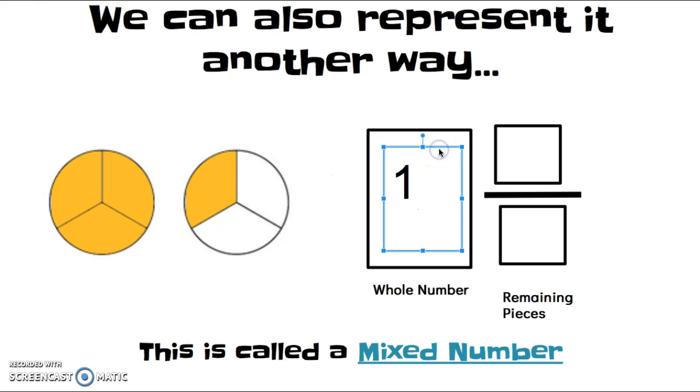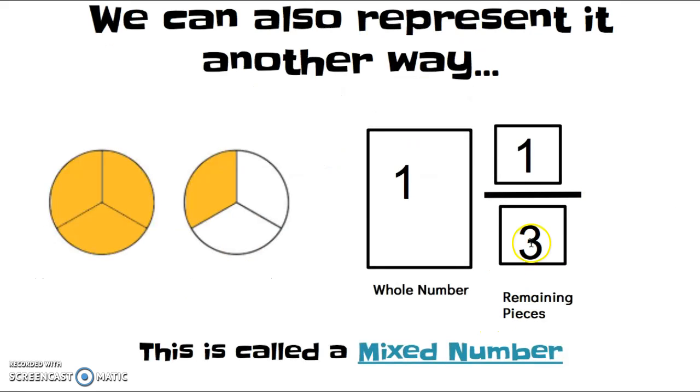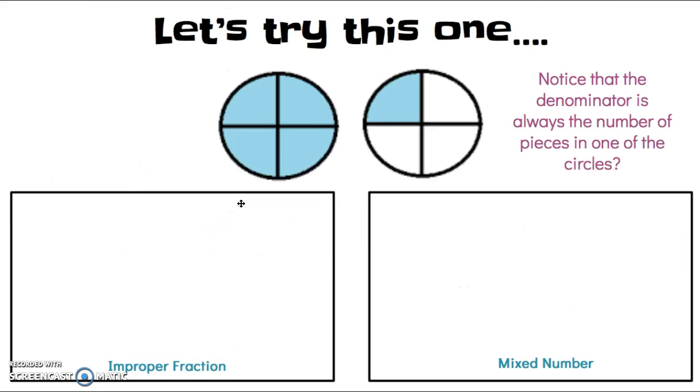And then, if we look at our second pie there that's only partially colored, we have 1 piece that's colored, right, out of 3 possible pieces. Did you notice that our denominator is the same between an improper fraction and a mixed number? It's always the same as the total number of pieces in each pie. That denominator doesn't change regardless of whether it's written as an improper fraction or a mixed number.